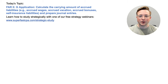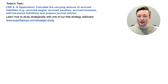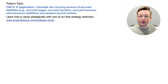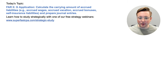Welcome to another FAR walkthrough video from SuperfastCPA. I'm Logan, and in today's video we're going to be going over FAR Area 2, Section G. This is an application topic: calculate the carrying amount of accrued liabilities such as accrued wages, accrued vacation, accrued bonuses, self-insurance liabilities, and prepare journal entries.